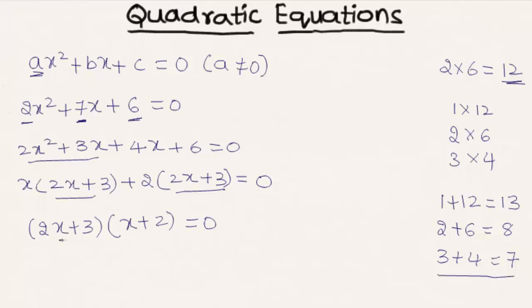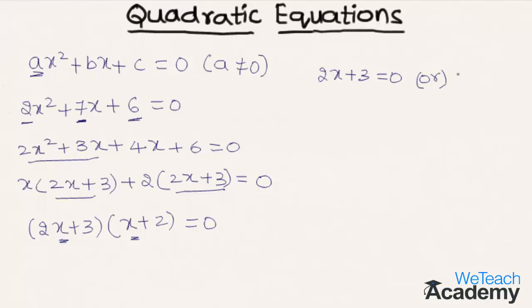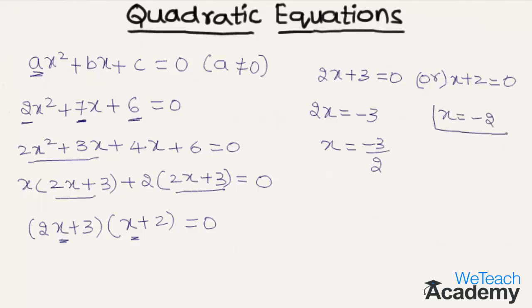The factors of the equation are (2x + 3) and (x + 2). Now let us find the values of x by equating both factors to zero: 2x + 3 = 0 or x + 2 = 0. From the first: 2x = −3, so x = −3/2. From the second: x = −2. This is how we solve a quadratic equation using the factorization method.